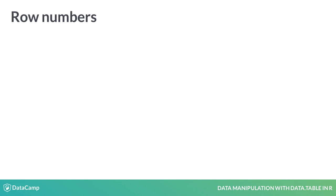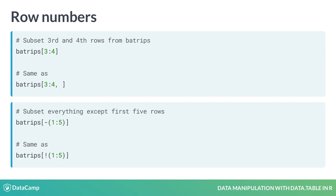Rows can be filtered using row numbers as you would do in a data frame, except the first argument is always interpreted as a row operation irrespective of whether or not you specify a comma. For example, to subset the third and fourth rows you can use the code as shown here. If you want to exclude a set of rows you can use the negative sign or the exclamation mark as shown here.